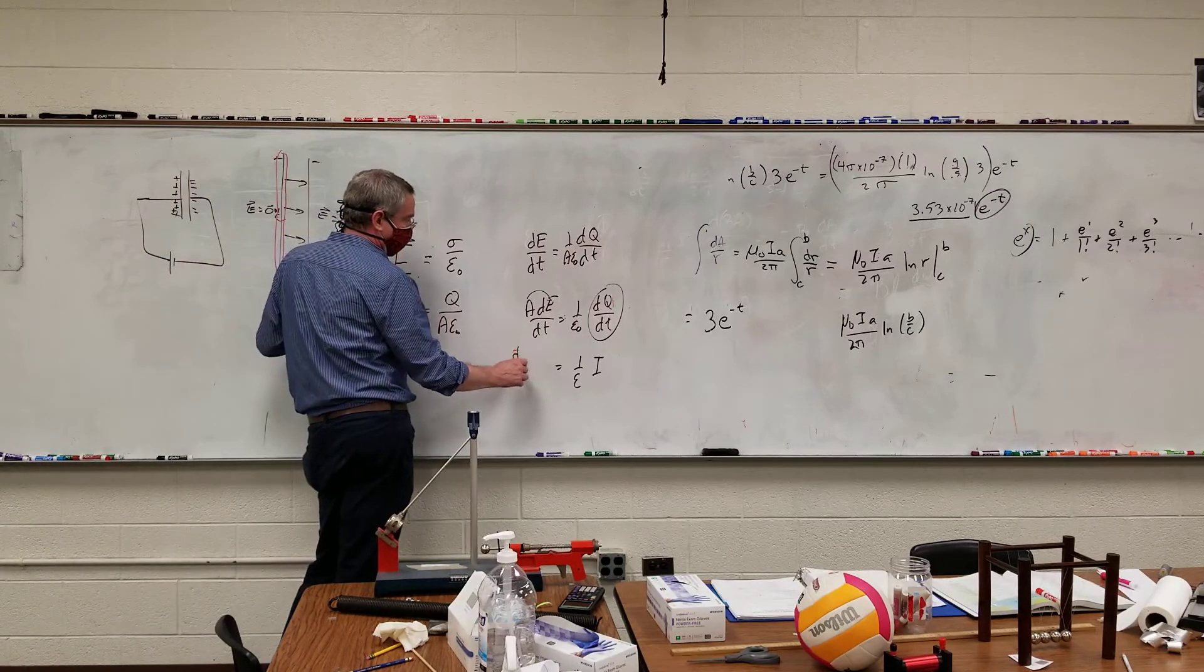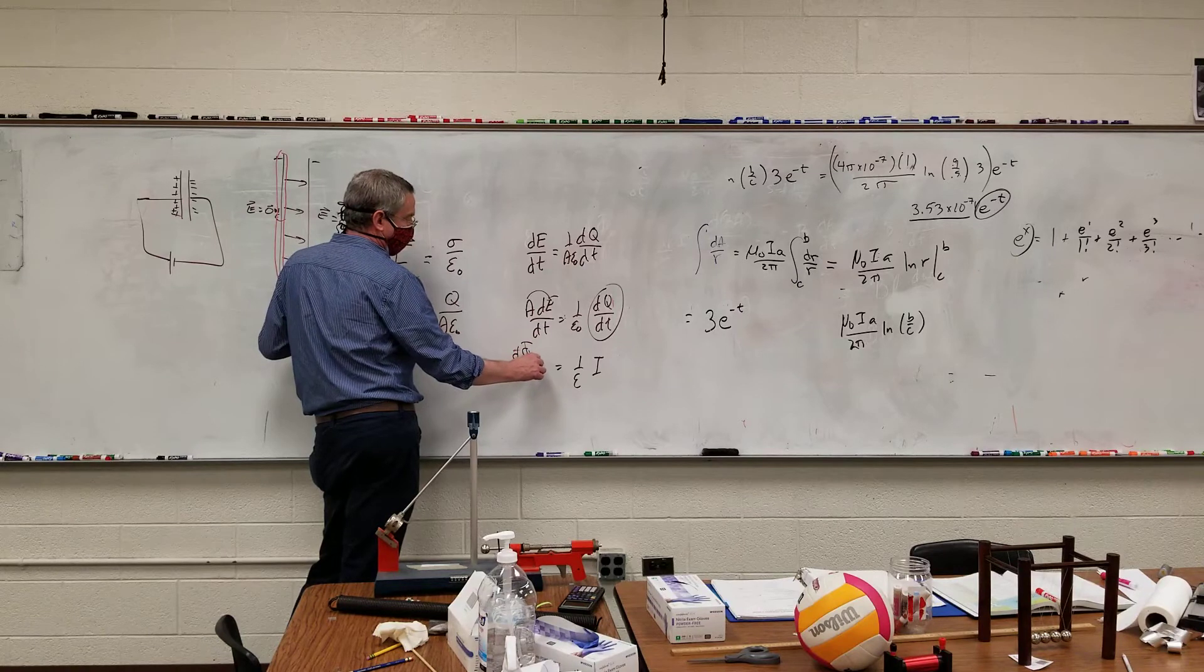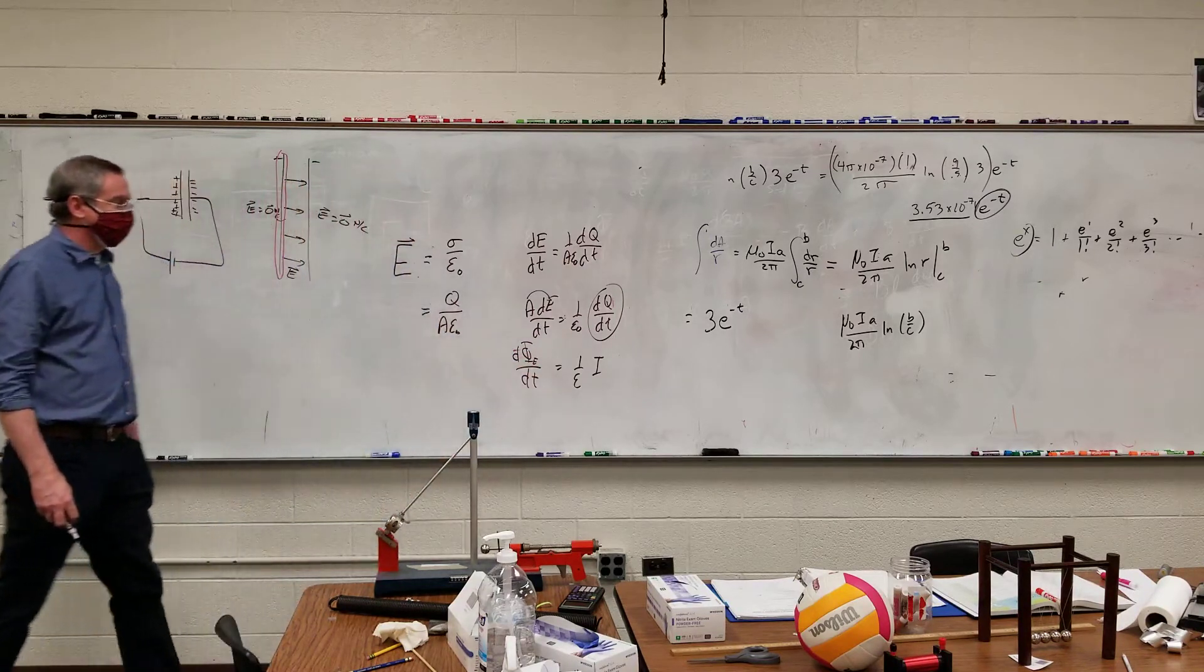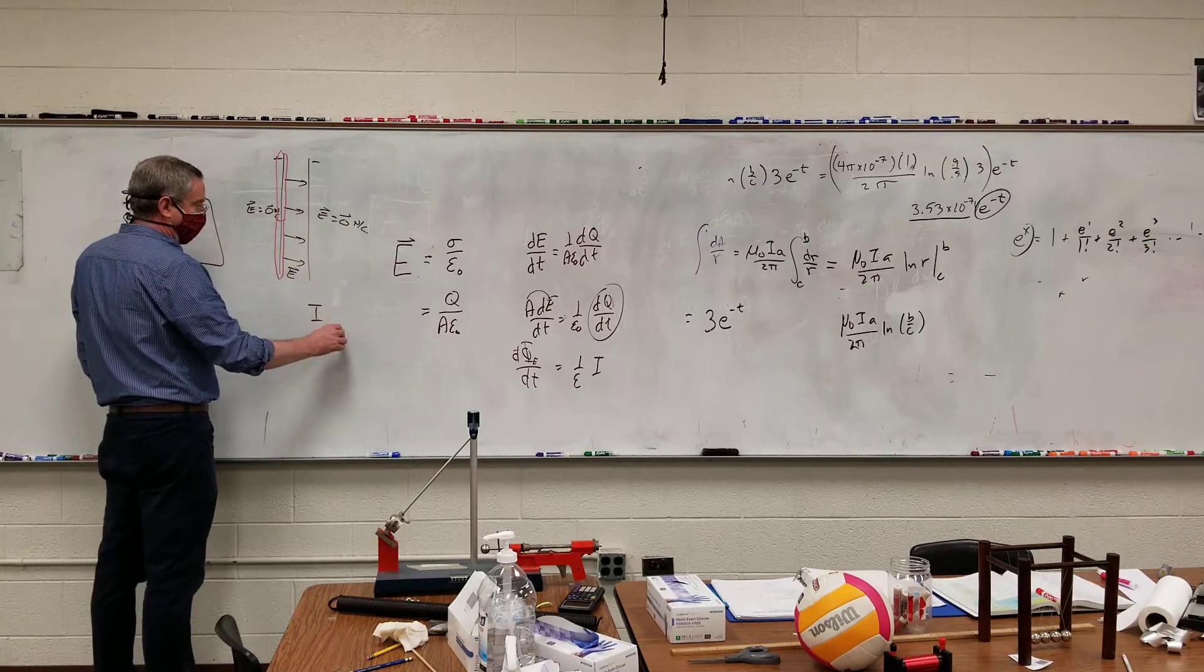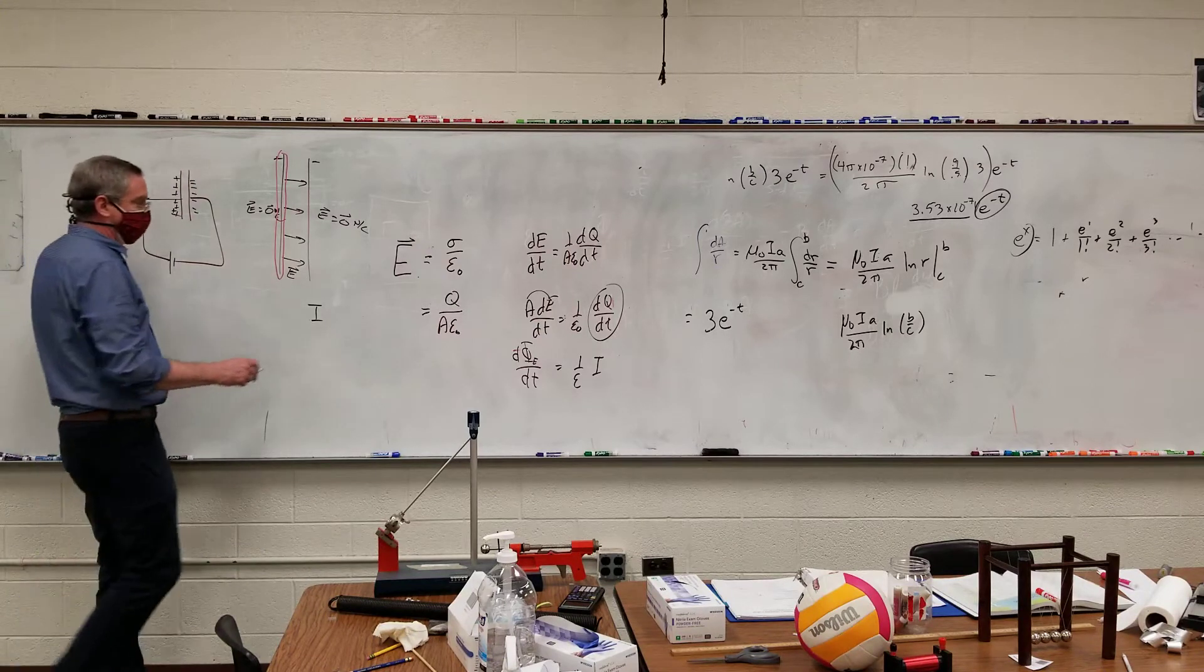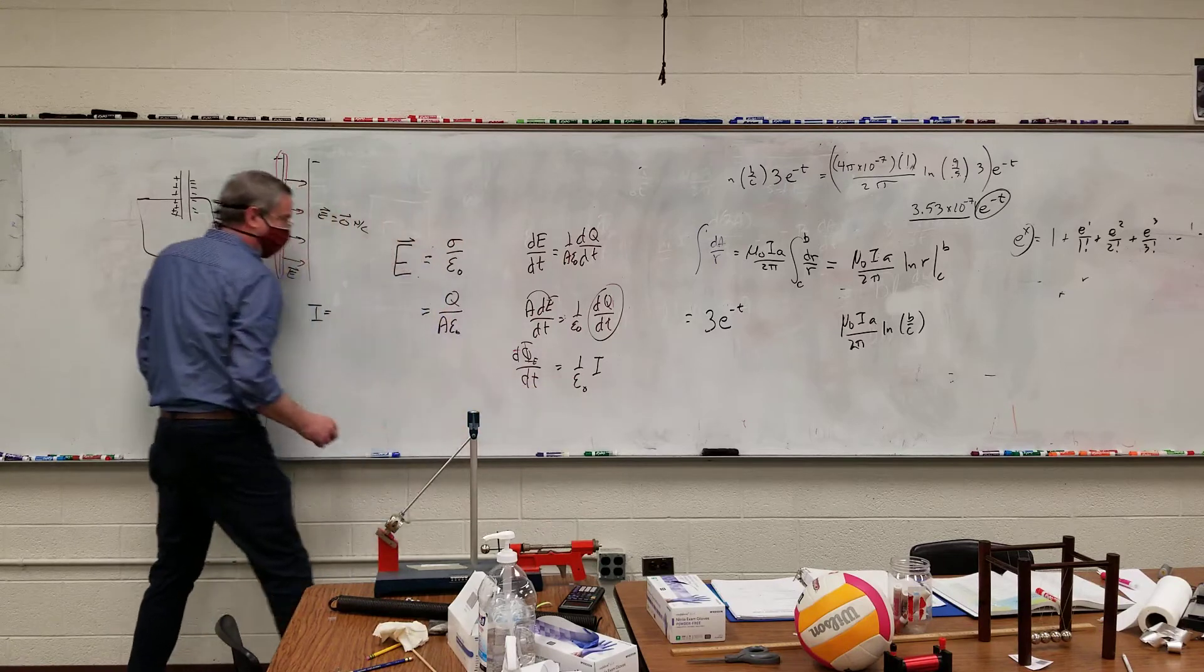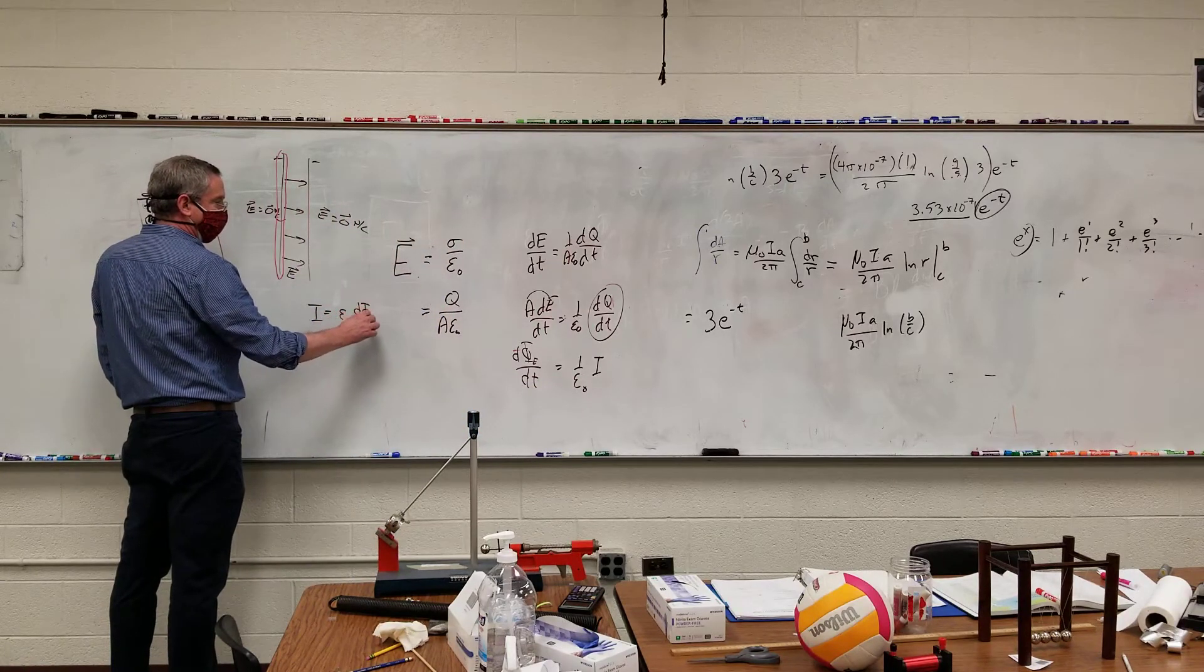And so this becomes d times the area times the electric field, which is the electric flux, dt, which is the subscript there. So I have epsilon sub-naught d phi E dt.